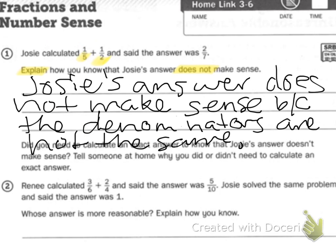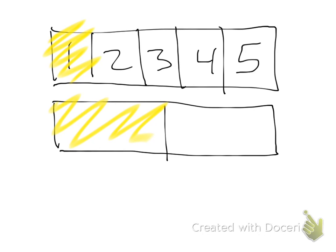Let's take a look at the second question. And then it says, did you need to calculate an exact answer to know that Josie's answer does not make sense? Did we? No, we know you cannot add fractions if they don't have the same denominator. Now, tell someone at home why we didn't have to calculate it. Again, Josie's answer does not make sense because the denominators are not the same. They are not the same because they are not the same size if we split it up just like here. Draw this picture. Show them this picture we drew over here.